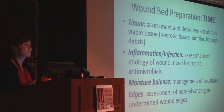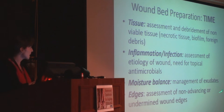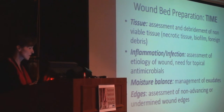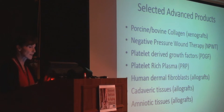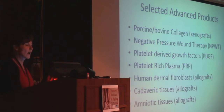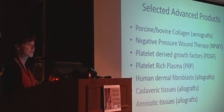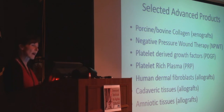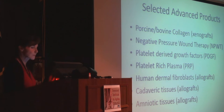Just to review — the TIME concept for wound bed preparation. When we think about advanced modalities, we're really focusing on the E — Edges — really trying to get these wounds to move forward. Some products available include porcine, bovine, or ovine collagen xenografts; negative pressure wound therapy; platelet-derived growth factors; platelet-rich plasma; human dermal fibroblasts — a type of allograft; cadaveric tissues — a type of allograft; and amniotic tissue, which is a big favorite of mine.